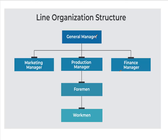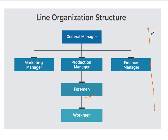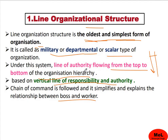This is a framework where at the top level you have a general manager. Below that, there are managers — marketing manager, production manager, finance manager, HR manager, and others. Then there are supervisors who work with workers. The command flows from top to bottom of the organization, following the hierarchy in a particular way. The line of authority flows vertically from top to bottom.